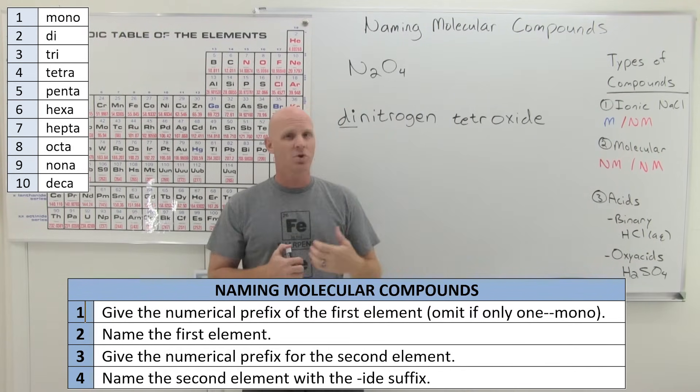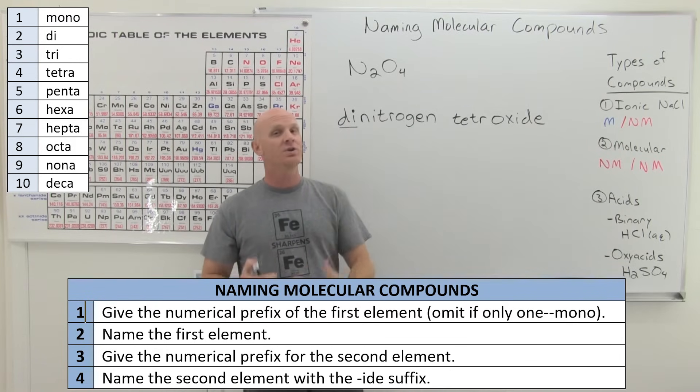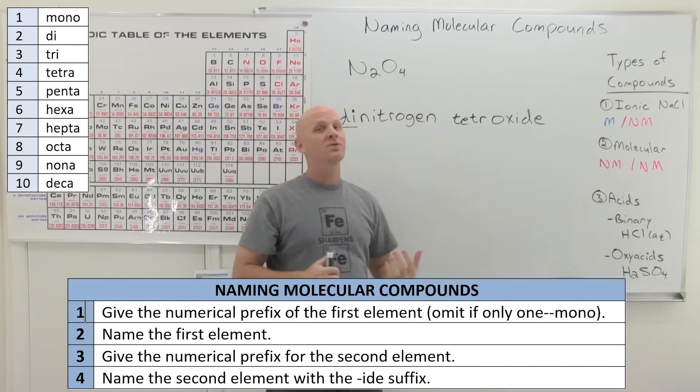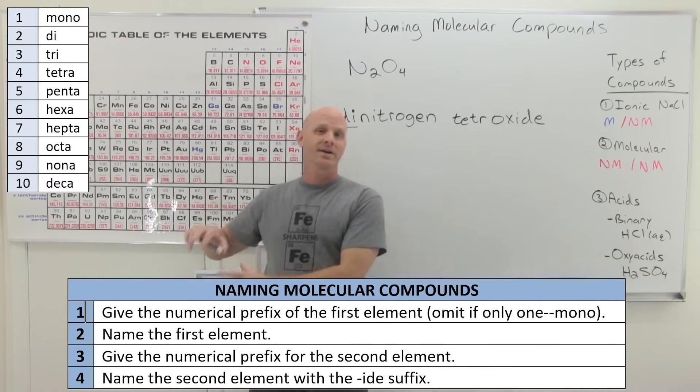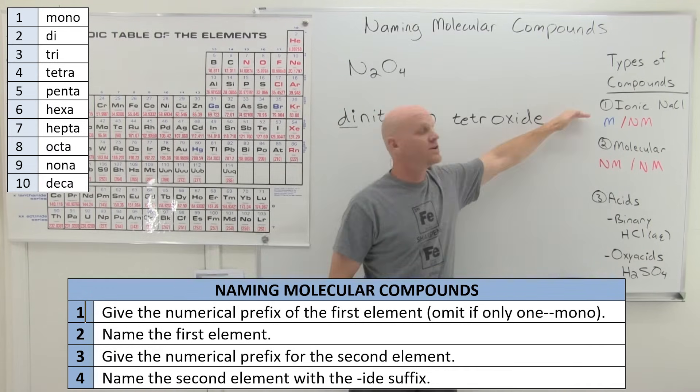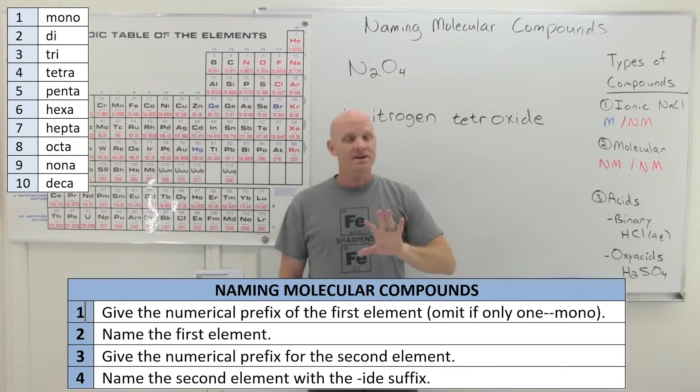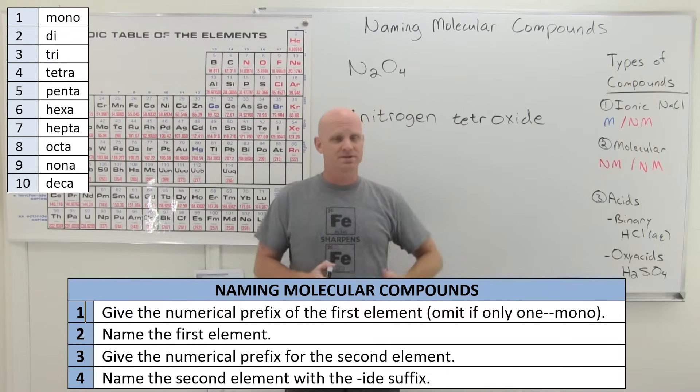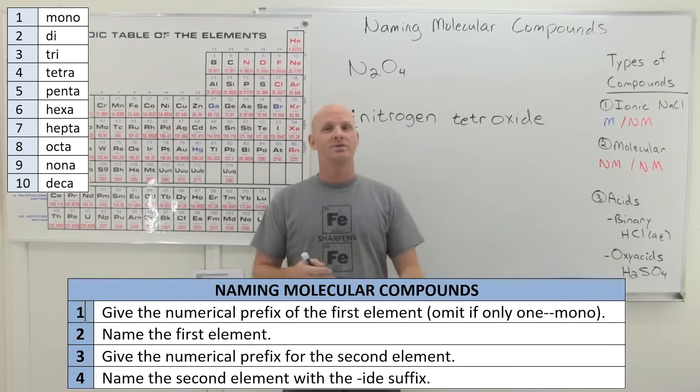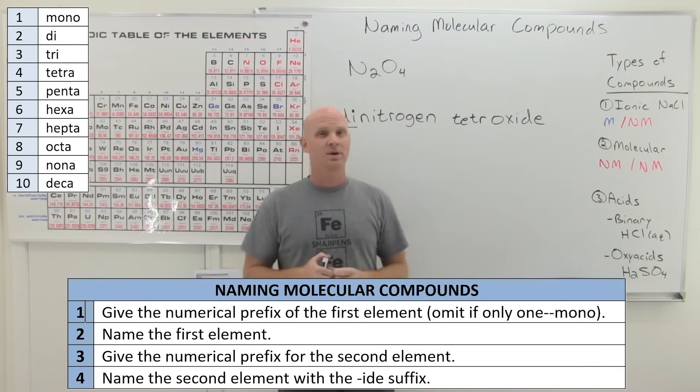The big mistake comes, though, when students start trying to use the ionic rules for naming molecular compounds or using the molecular rules for naming ionic compounds. And so you really got to get good at identifying which kind of compounds you have and then using the appropriate set of rules. Especially on a multiple choice test, professors are really good at making detractors, wrong answers that just use the wrong system of rules.